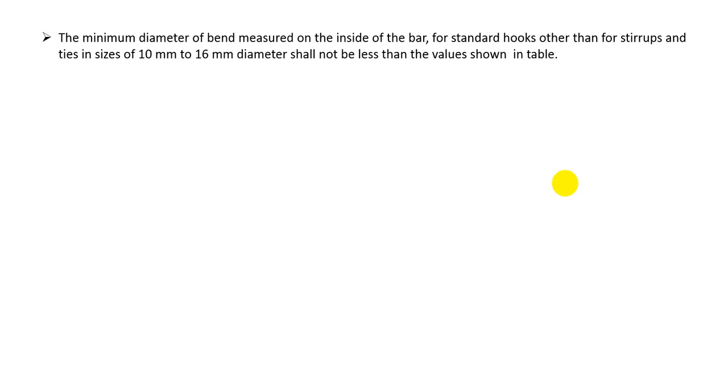What is showing here? If we show table here, we are showing that for bar size, the minimum diameter of band measured on the inside of the bar for standard hooks, other than for straps and ties in size of 10mm to 16mm diameter, shall not be less than the value shown in table.